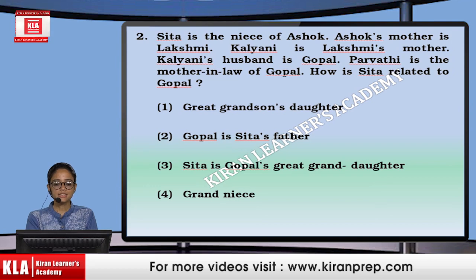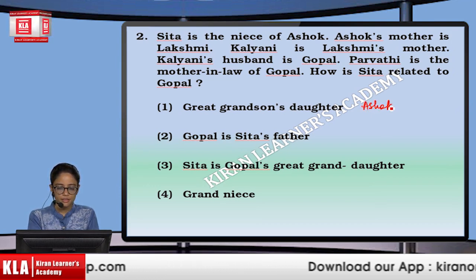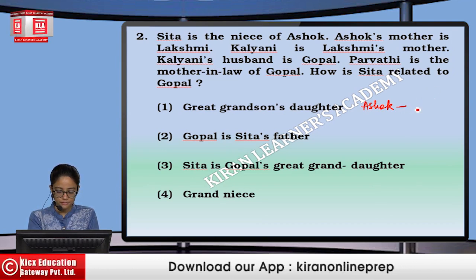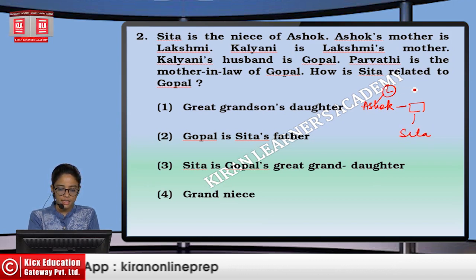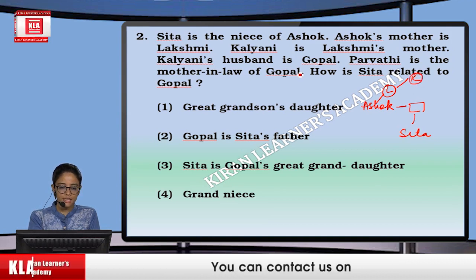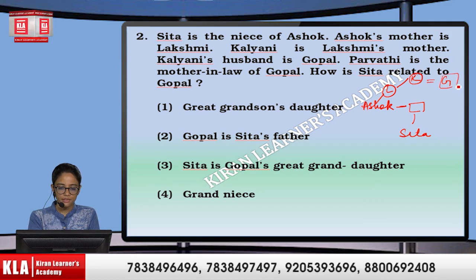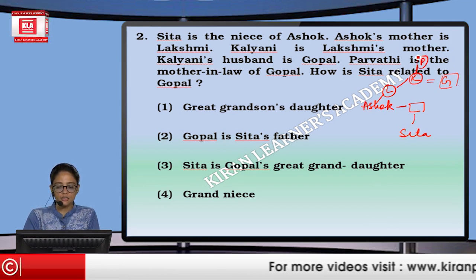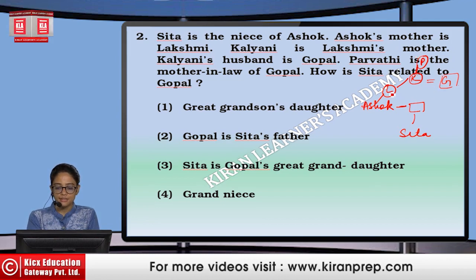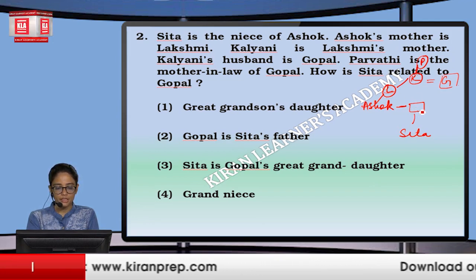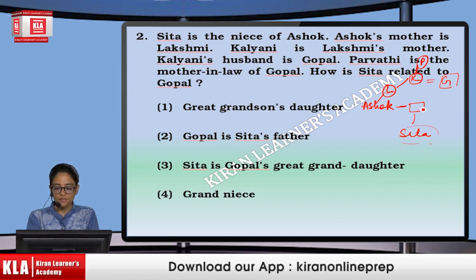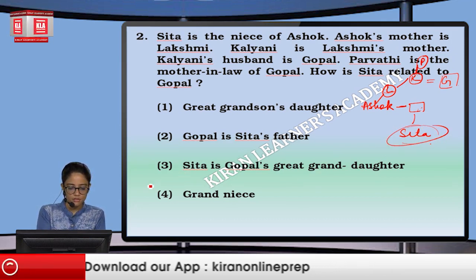Next, Sita is niece of Ashok. Ashok has a brother whose daughter is Sita. Ashok's mother is Lakshmi. Kalyani is Lakshmi's mother. Kalyani's husband is Gopal. And Parvati is mother-in-law of Gopal, that means she is mother of Kalyani. How is Sita related to Gopal? For Gopal, Lakshmi is daughter, and Lakshmi's son is Ashok's brother, so that will be grandson, and grandson's daughter will be great-granddaughter. That means option number third.